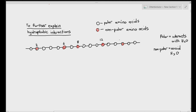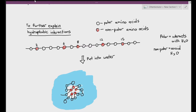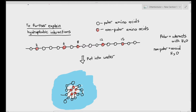Polar amino acids can interact with water; non-polar amino acids avoid water. Imagine putting the chain into water — the polar ones face outside and the non-polar ones curl inwards, because they cannot interact with water. So they interact with each other instead, and in attempting to avoid water they cause that single straight chain to form a 3D structure. That's how hydrophobic interactions are created.